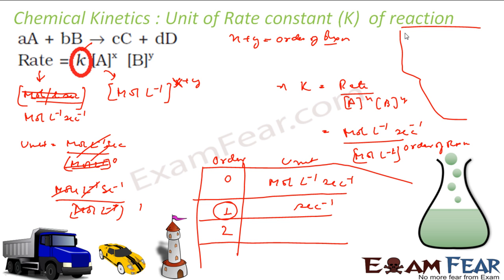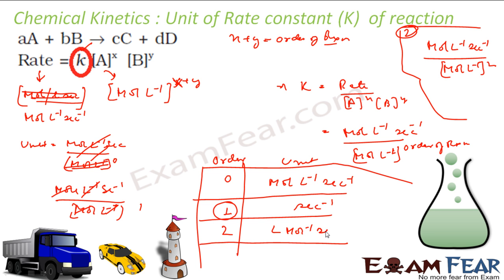For second order reaction, the rate unit is moles per liter per second, and the denominator becomes (moles per liter)^2. Solving this, one moles/liter cancels and you get liter per mole per second. Similarly for third order, the unit becomes liter² per mole² per second, but generally we use zero and first and second order.